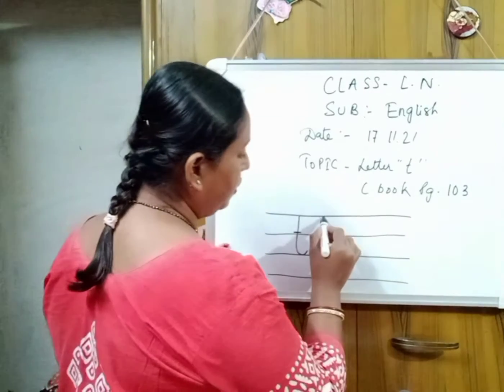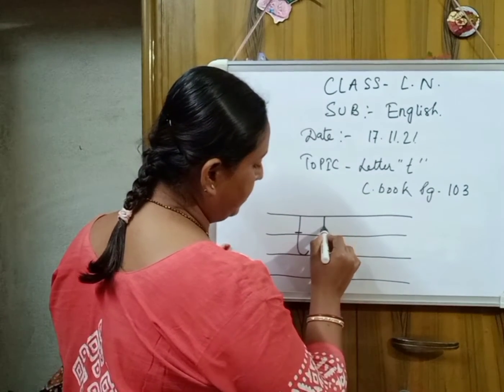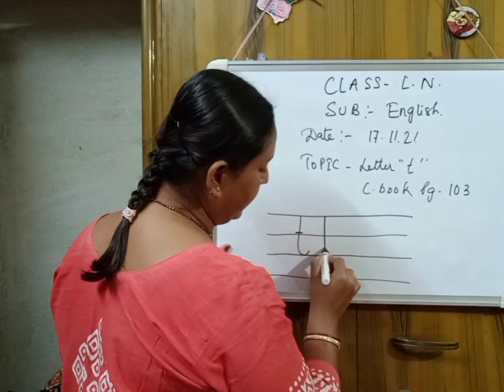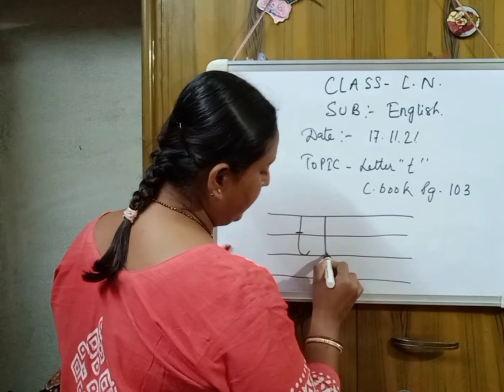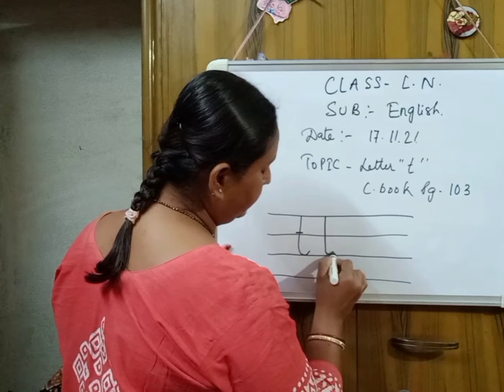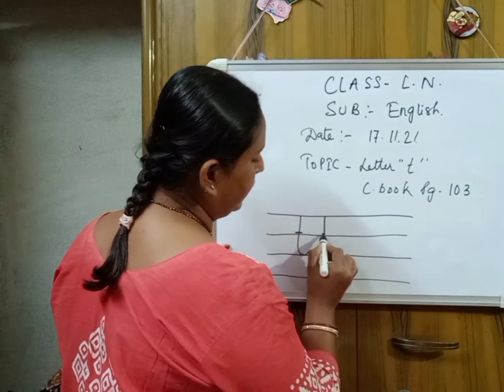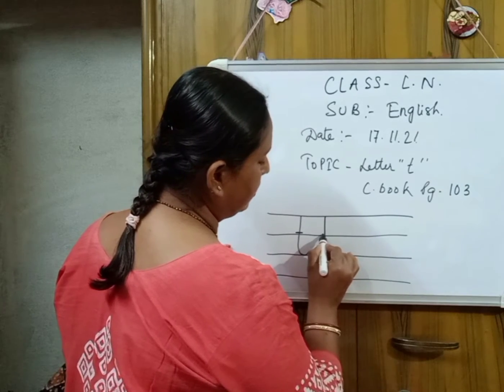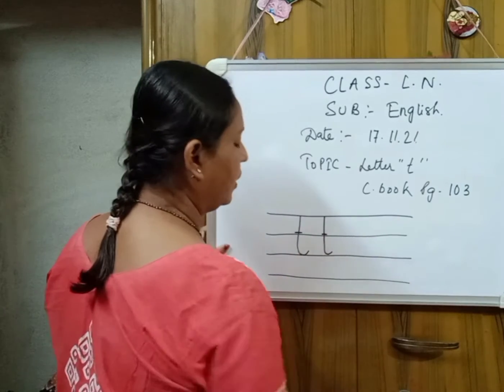First of all, start from here, make a standing line, then make a curve, then make here a small sleeping line. Okay children.